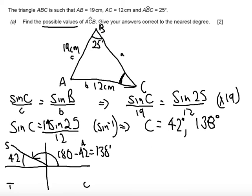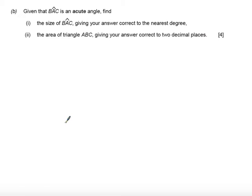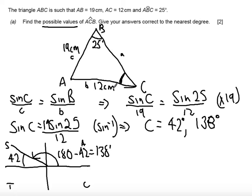Okay so let's look at part B. Part B says given that the angle BAC is acute find the size of BAC. Now if we go back to our diagram we now know angle BAC this angle down here that's acute. So that means that this angle ACB must be obtuse.